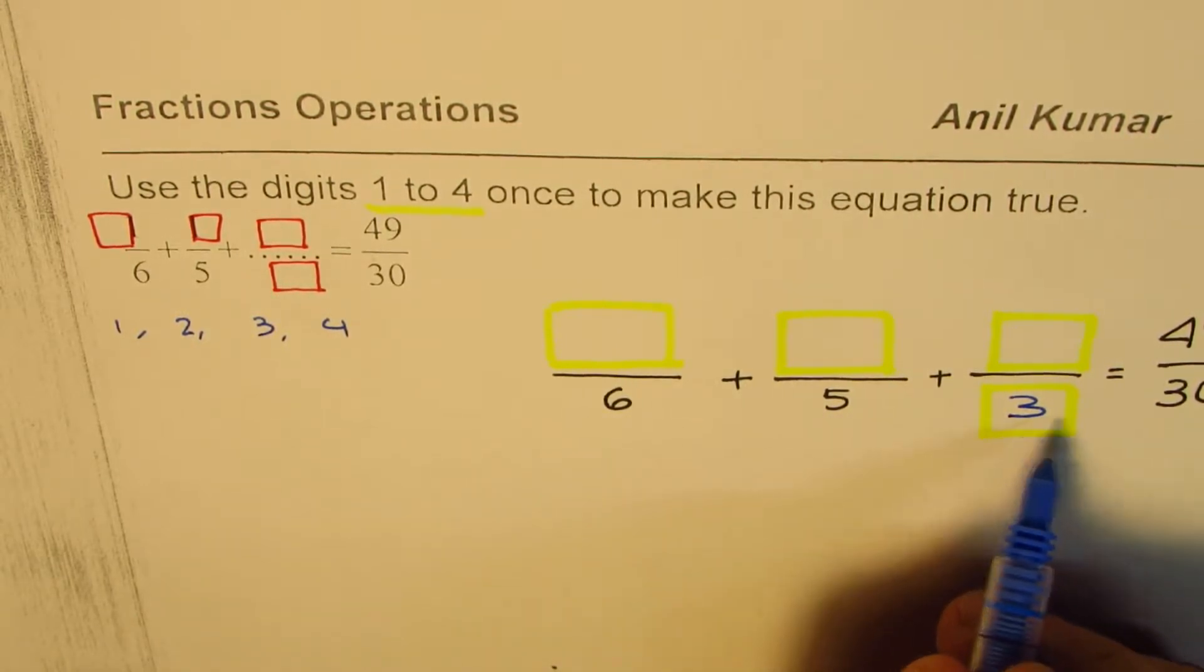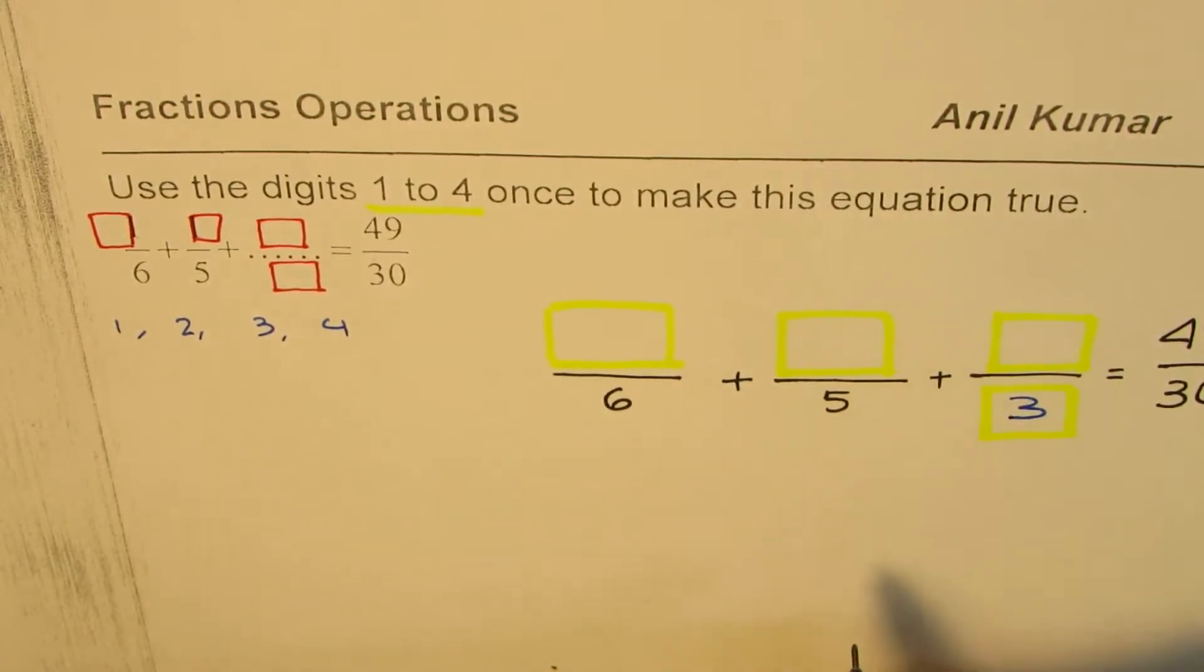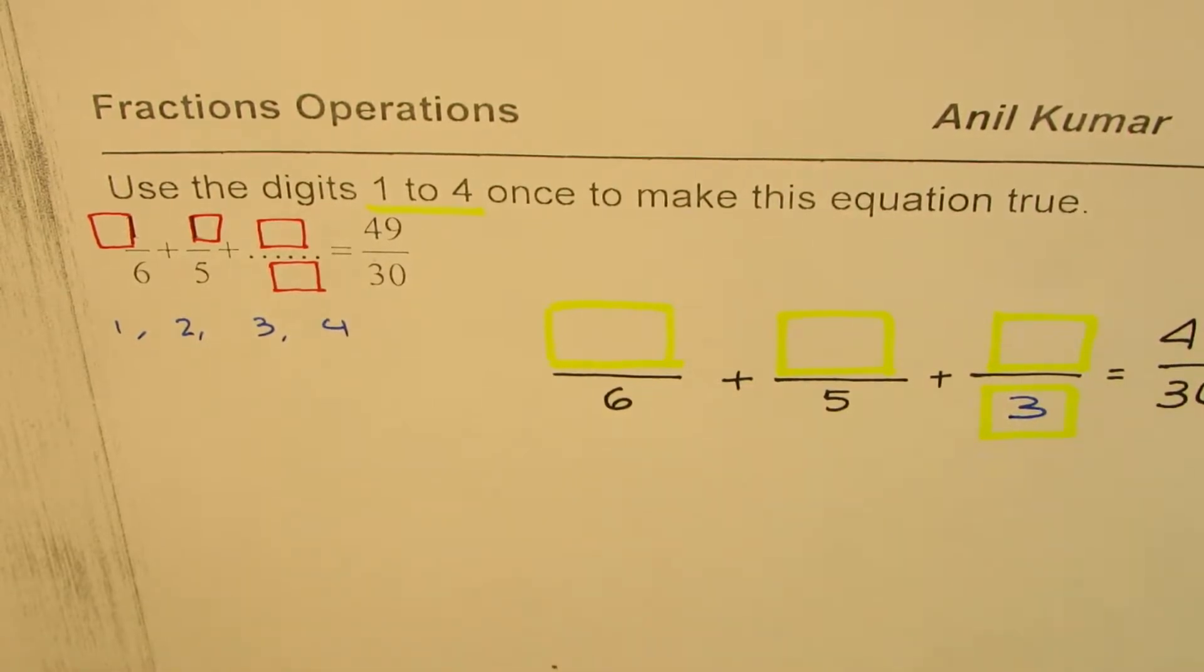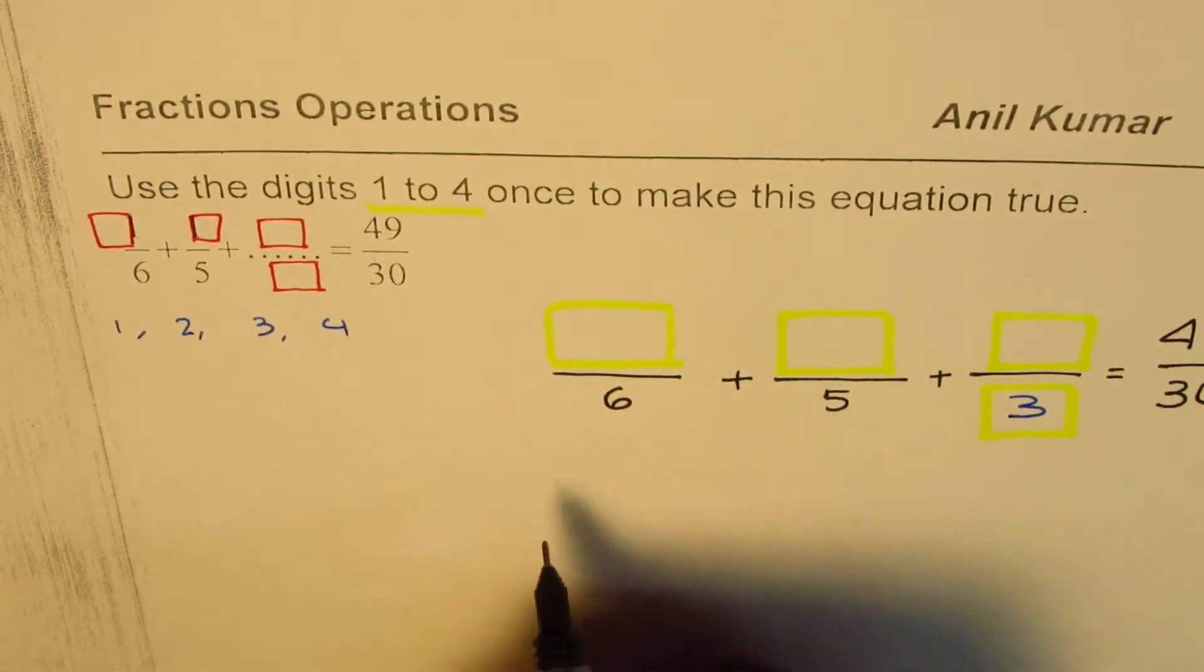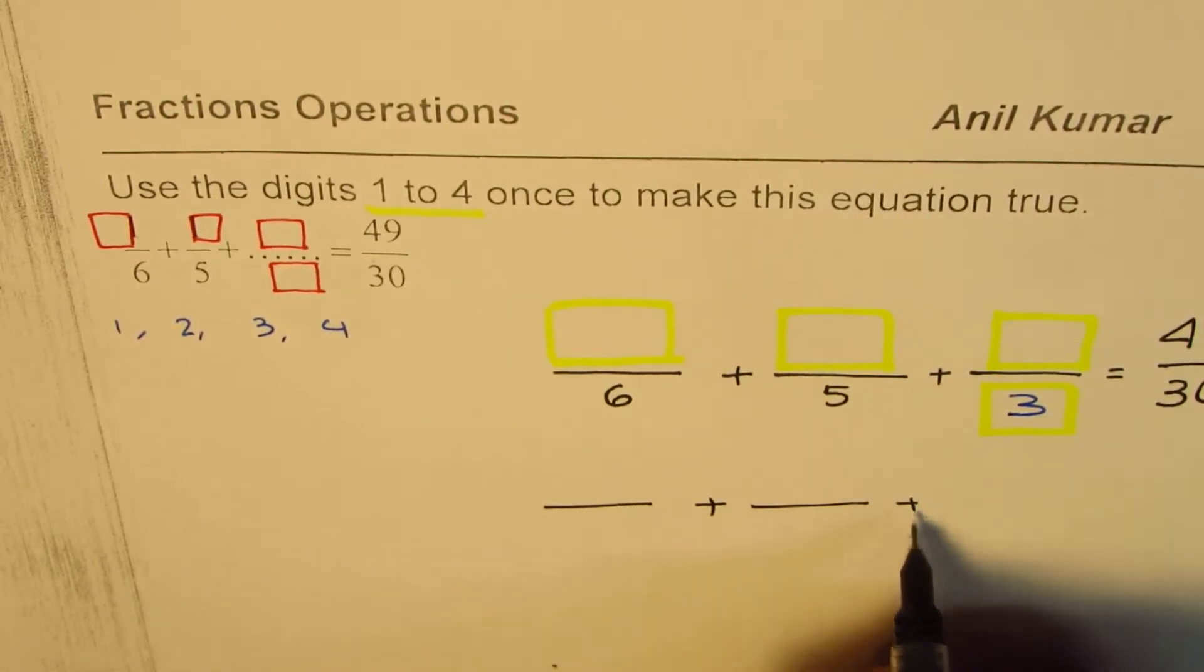Now if I use 3 here in this particular case, I do get the common denominator of 30. Now how do I get the numbers in the numerator so that we get 49 over 30?